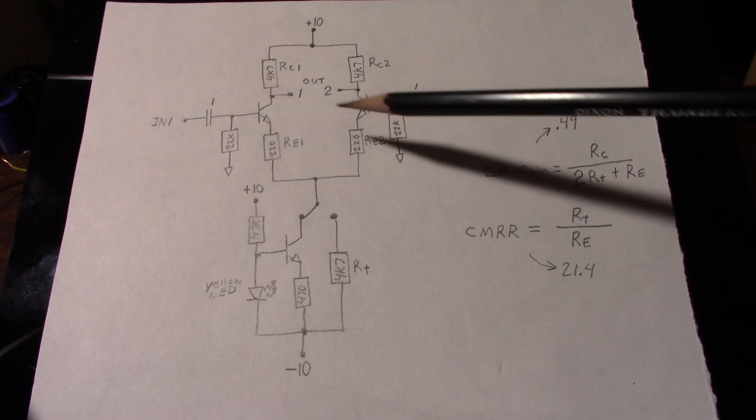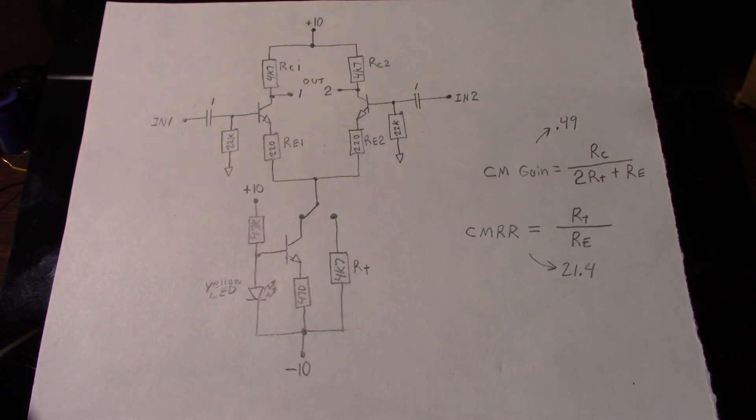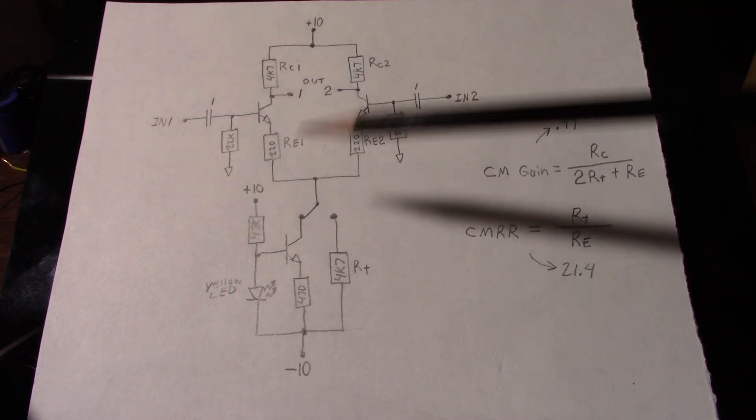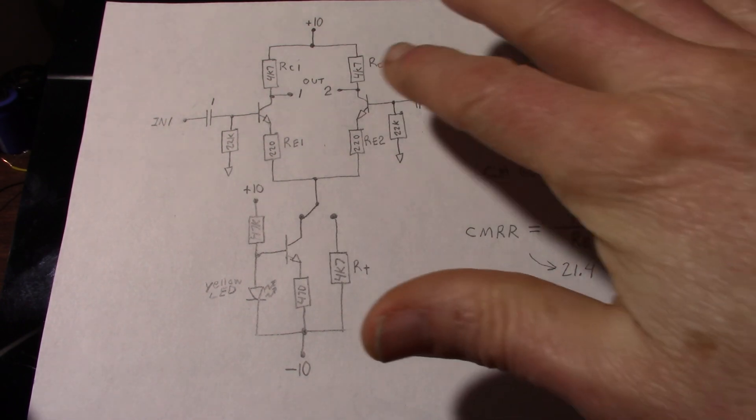But when that's occurring and you're careful to match the transistors and match all the resistor values and you're using a constant current source, these circuits actually become independent.